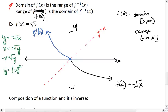But because the original function's domain is 0 to infinity, and the range is negative infinity to 0, this means for the inverse function, the domain is negative infinity to 0, and the range is 0 to infinity.